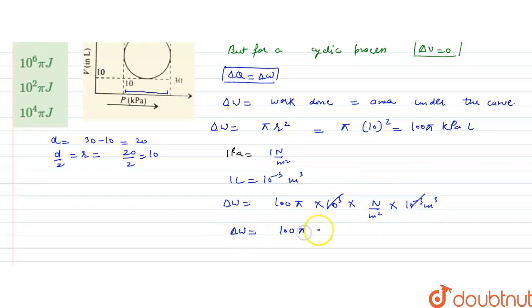Now, this will give us, this 10 raised to the power 3 is cancelled by minus 3. And this will give us, Newton meter. This will be, 100 pi, Newton meter. And 1 Newton meter is equal to Joule. So, it will be, the work done will be, 100 pi, Joule.